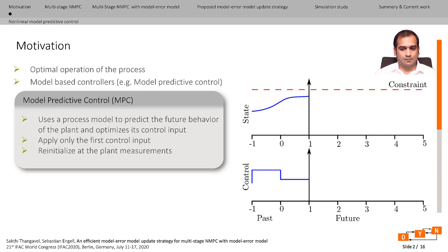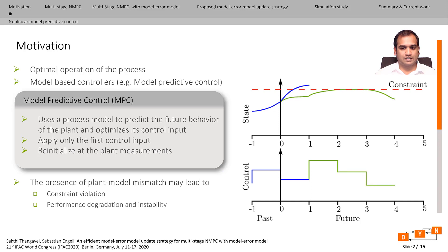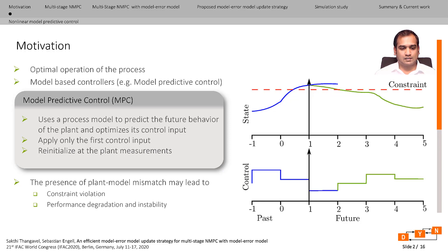At the next point in time, once new measurement information becomes available, the optimization problem is reinitialized at the plant measurements and resolved again. One of the major issues with such schemes is the presence of plant model mismatch. In the presence of plant model mismatch, the measurements (represented by blue) may not correspond to the predicted measurements (shown by green), and this may lead to constraint violation, performance degradation, or instability.